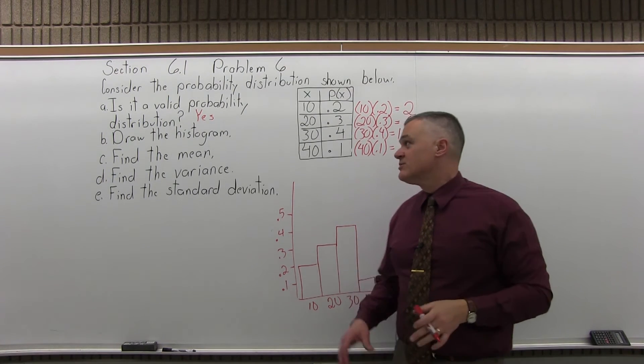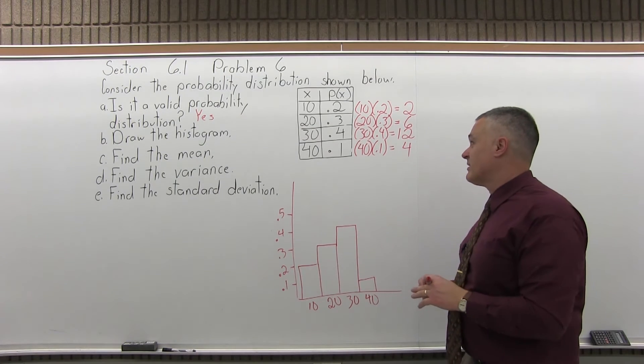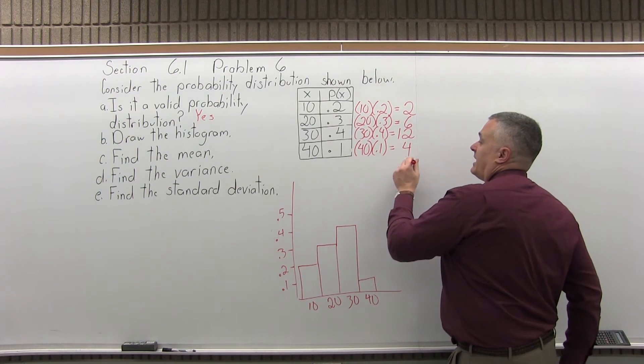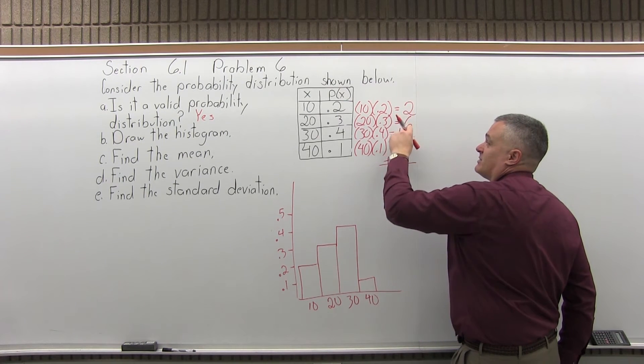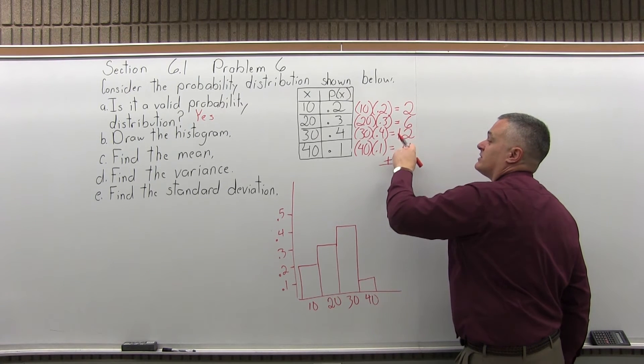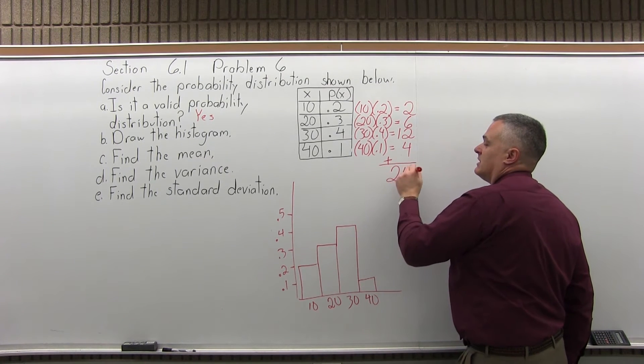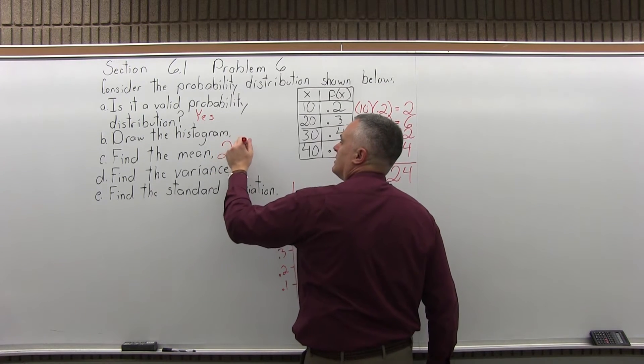Again, you could do these on a calculator. These are easy enough for me, I can do them without the calculator, but by all means, you can use the calculator if you like. And now, to find the mean or expected value some books call, you're going to add these numbers together. 2 plus 6 is 8, 8 plus 12 is 20, 20 plus 4 more is 24. So that's the mean for this probability distribution, 24.